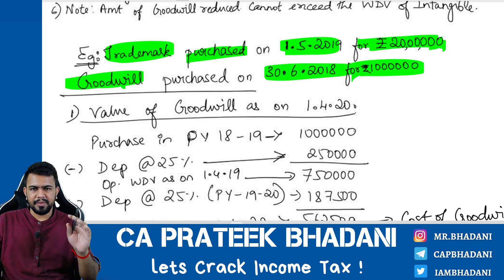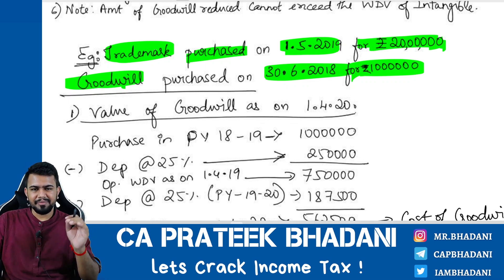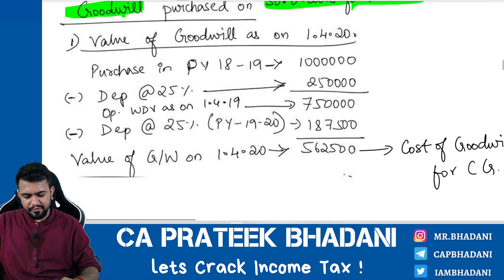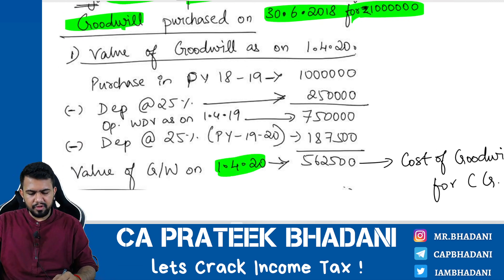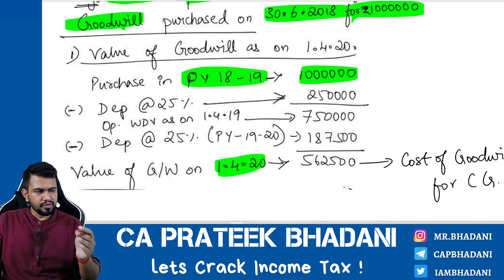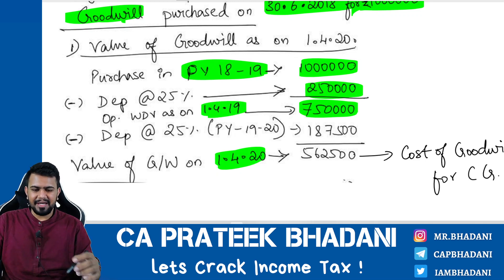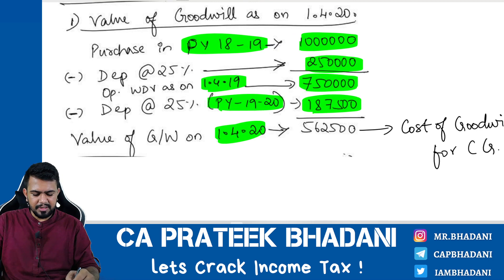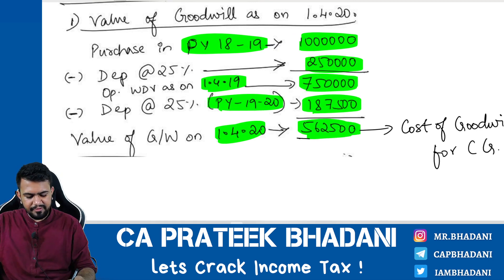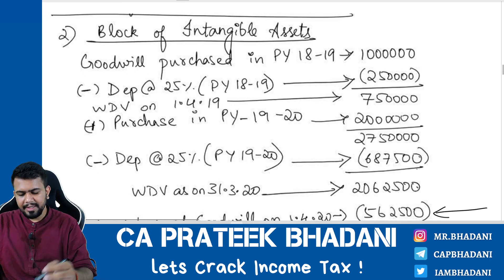Goodwill was purchased on 30th June 2018 for ₹10 lakh. As on 1.4.2020, we must remove the value of goodwill from the intangible asset block. First, find the value of goodwill as on 1.4.2020. The goodwill was purchased in previous year 2018-19. Reduce depreciation of ₹2,50,000 (25%) to get the value as on 1.4.2019 — that is ₹7,50,000. Then in previous year 2019-20, reduce the depreciation again to get the value as on 1.4.2020, which is ₹5,62,500.